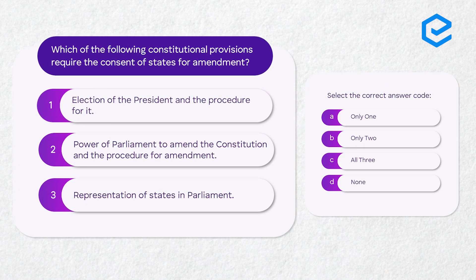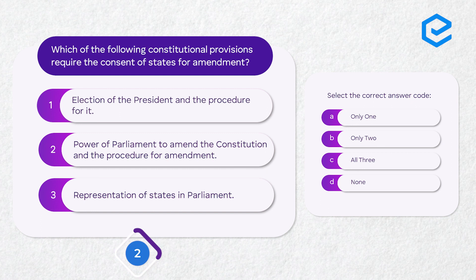The next important question: which constitutional provisions require the consent of states for amendment? Statement one: election of president and the procedure for it. Statement two: power of parliament to amend the constitution and procedure for amendment. Statement three: representation of states in parliament. The correct answer is all three. All three are related to federal provisions; therefore, if these need to be amended, you have to take the consent of 50% of states.